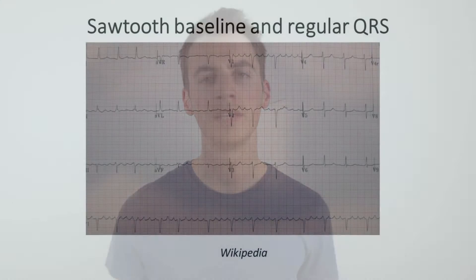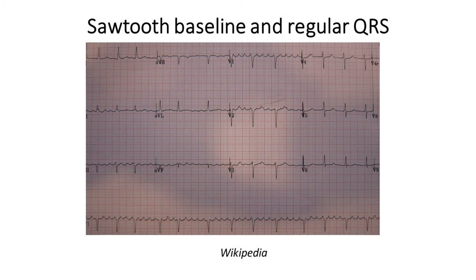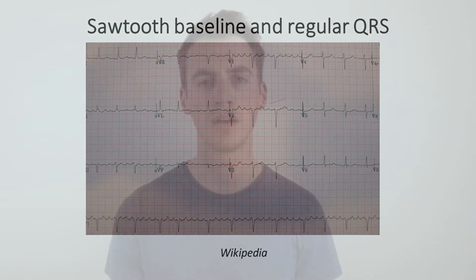You can classify atrial flutter as typical or non-typical. Typical atrial flutter is a re-entrant atrial tachycardia whereby you have an anti-clockwise rhythm when looking at the tricuspid valve face on. The rhythm travels upwards along the interatrial septum and down the right side of the right atrium in an anti-clockwise fashion.